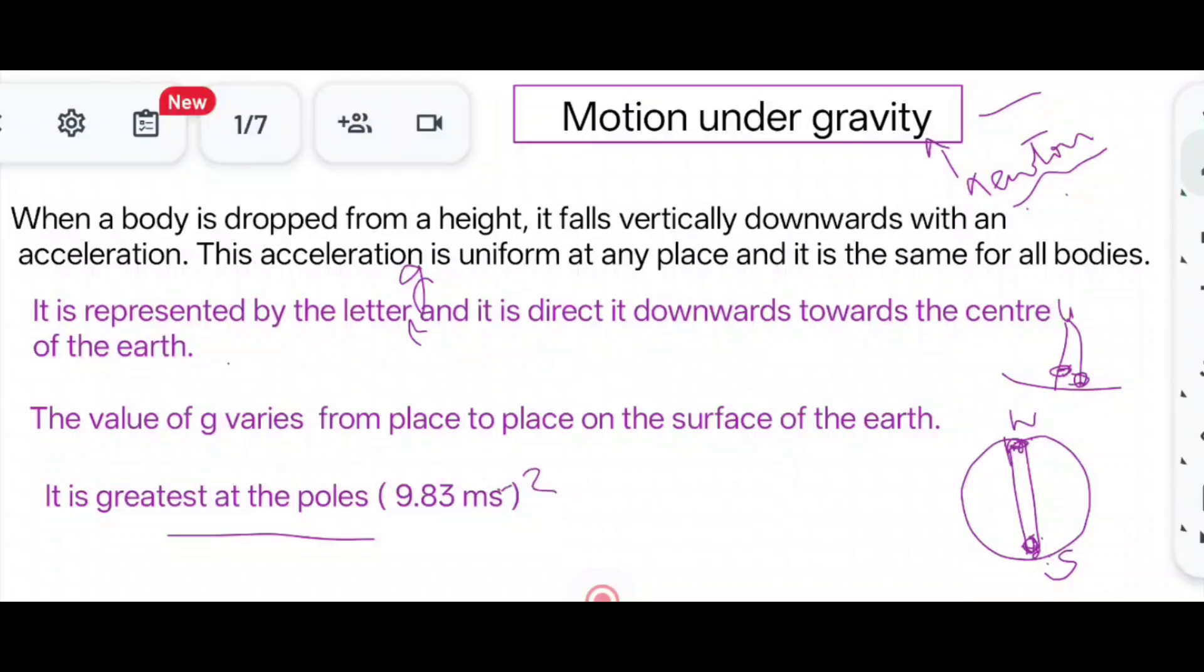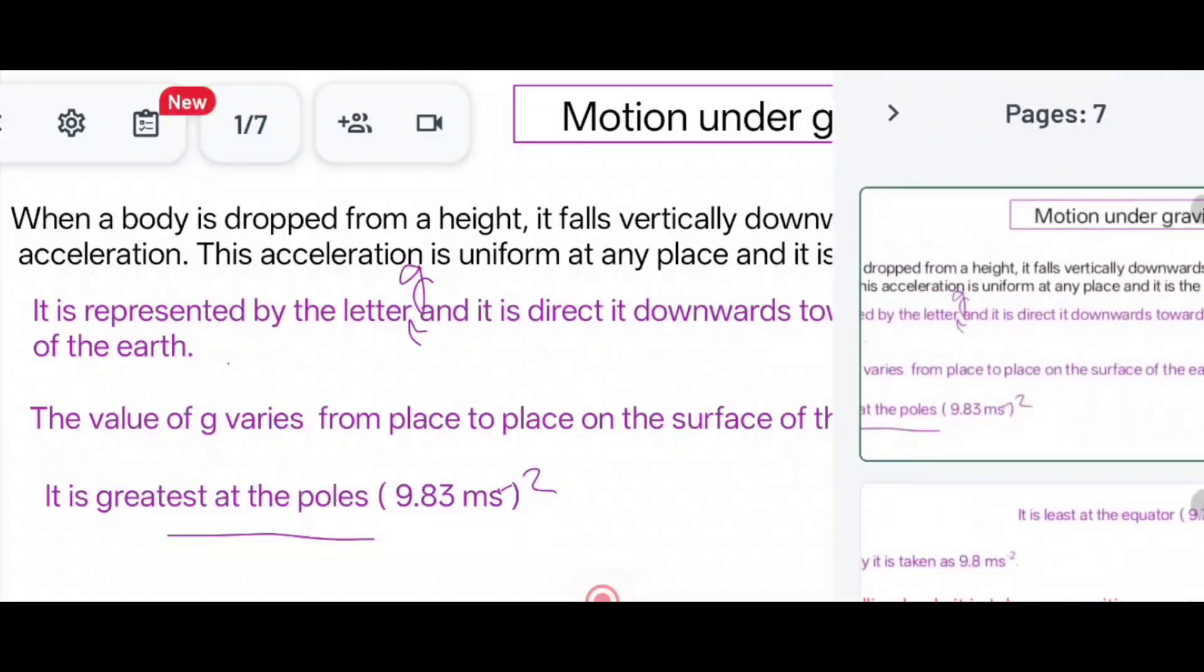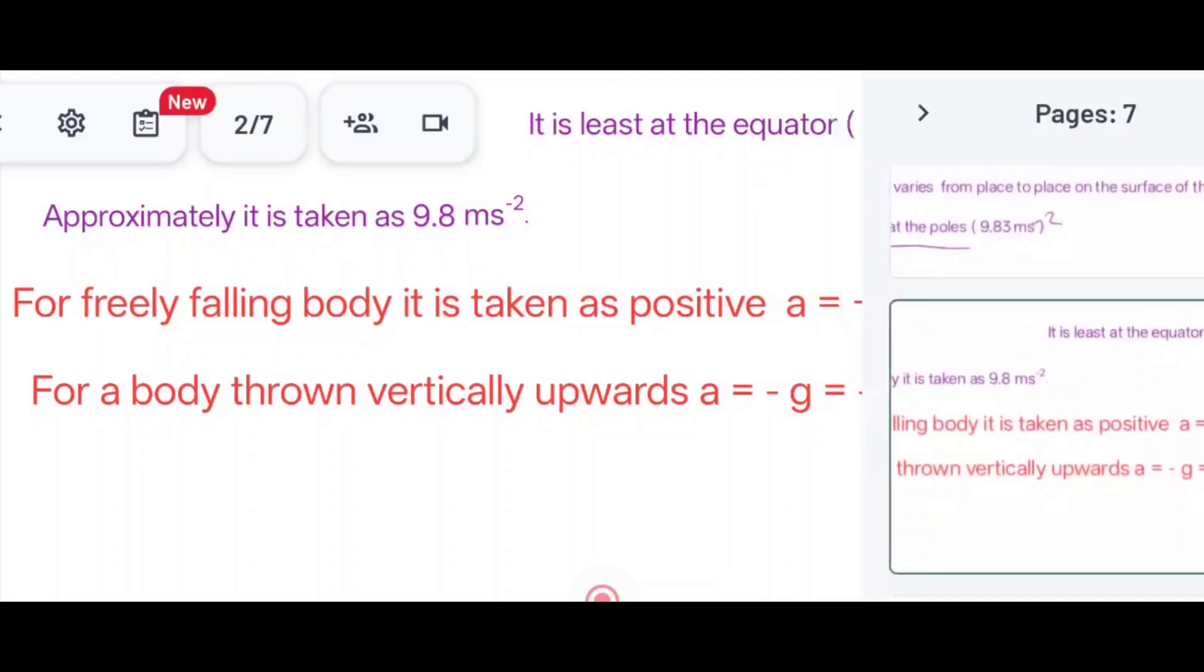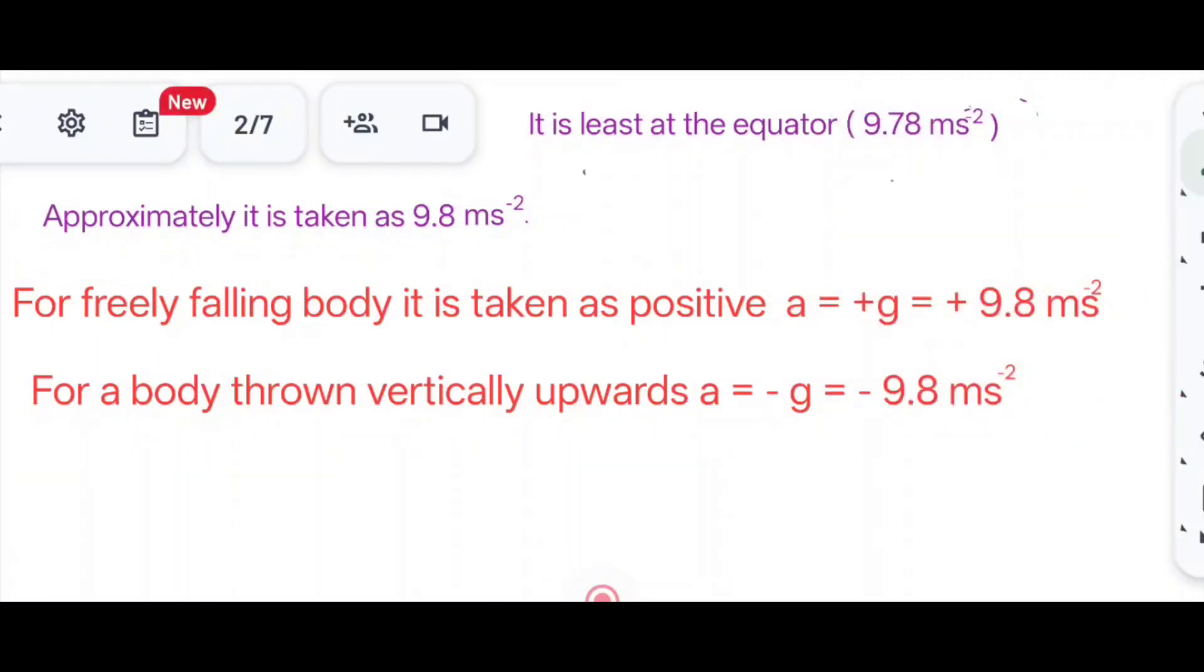Let us see how it varies towards the center. It is least at the equator. The equator is the line which divides the earth into two imaginary lines. It is at the center of the earth and G will be minimum there, that is 9.78 meters per second squared.